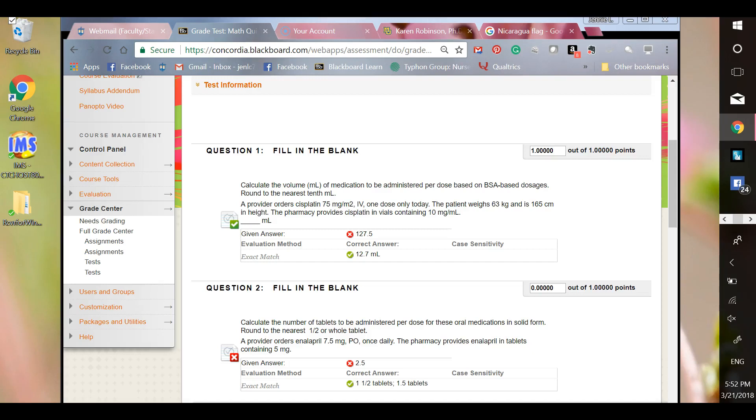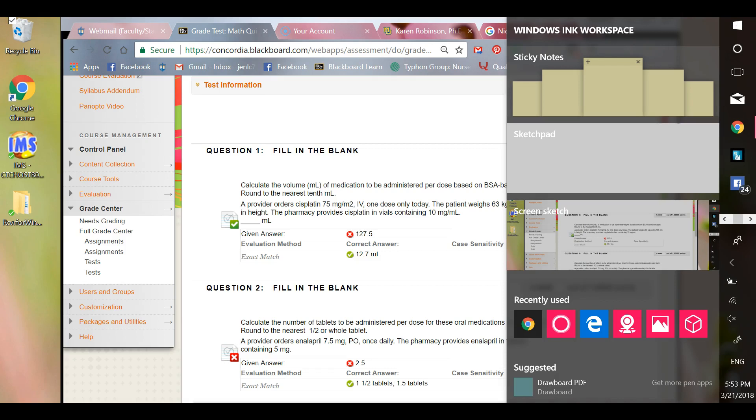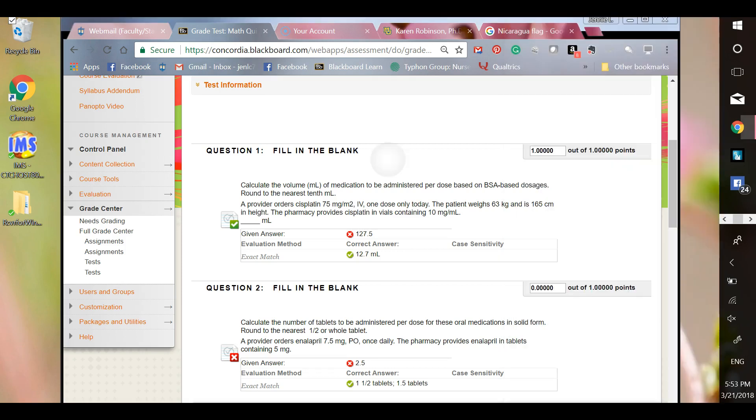Hi there. I'm going to go through a math question. I know a lot of you had some issues with math and the calculation. So this one's a little bit more difficult because now we're dealing with body surface area where you have to know a formula in order to get your body surface area and then calculate the dose. So there's a few different things that go into this.